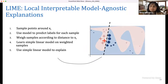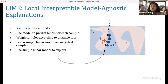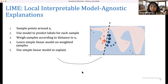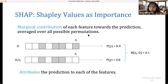The intuition LIME exploits is that even a model with a very complex nonlinear decision boundary globally can be approximated using simple linear models locally. Regardless of how nonlinear the global surface is, if you zoom in enough, you can find a small area where you can approximate the model using a linear model.